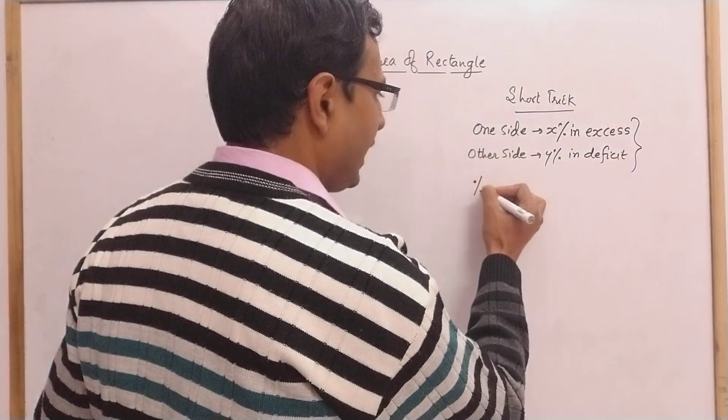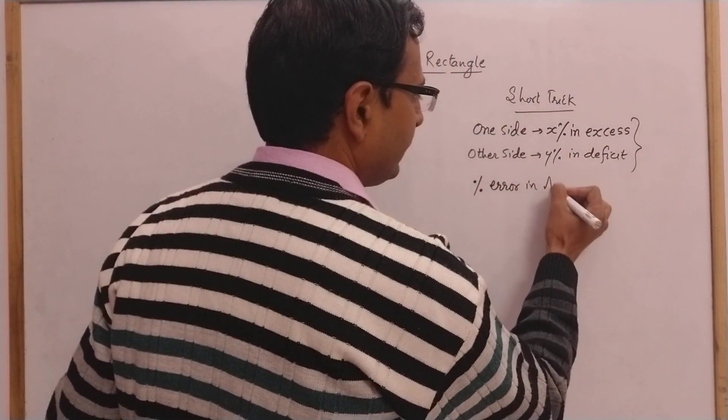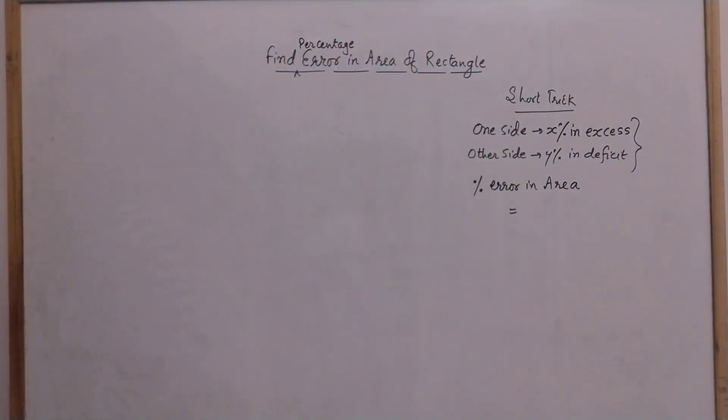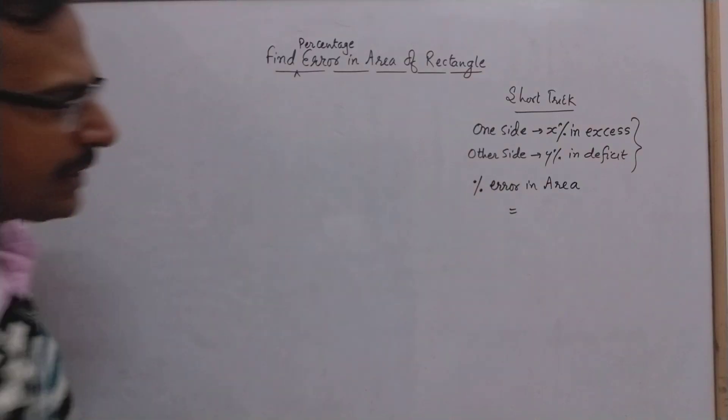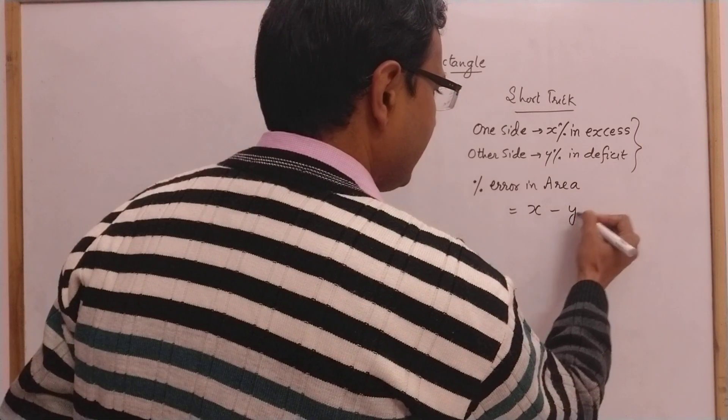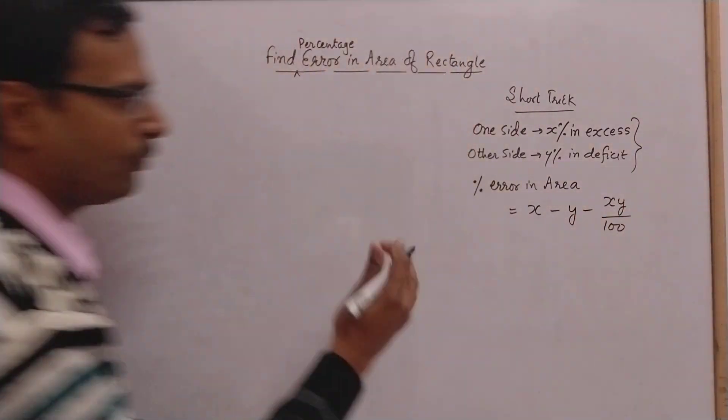The percentage error in area can be found out directly by using a simple short trick, and that formula is x minus y minus the product of x and y divided by 100.